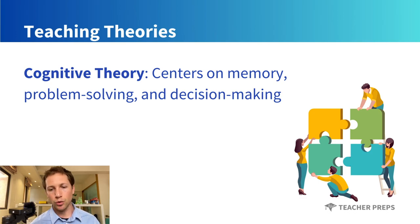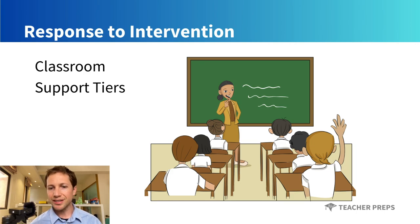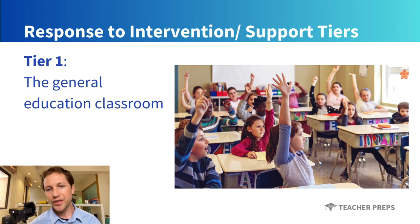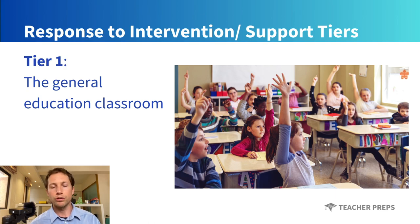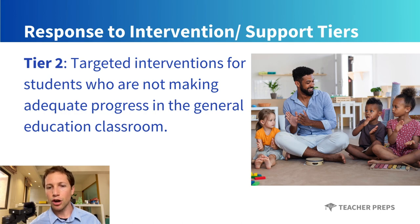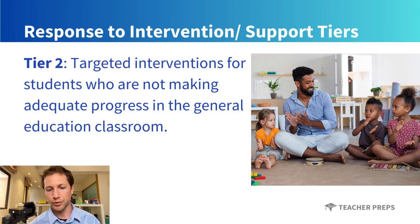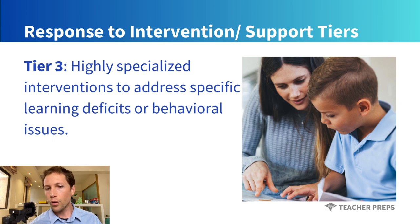You might receive a question in Module 1 about response to intervention or a multi-tiered system of support. Tier one is the foundational level, which includes high-quality evidence-based instruction and support provided to all students in the general education classroom. Tier two offers targeted interventions for students who are not yet making adequate progress, conducted in small groups. Tier three is for students who need even more individualized, intense support with highly specialized interventions designed to address specific learning deficits or behavioral issues.